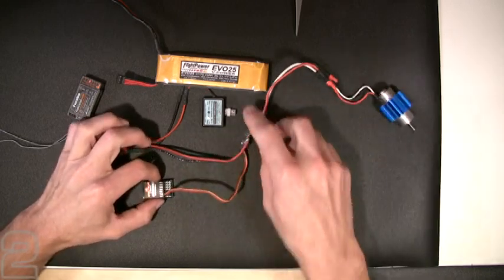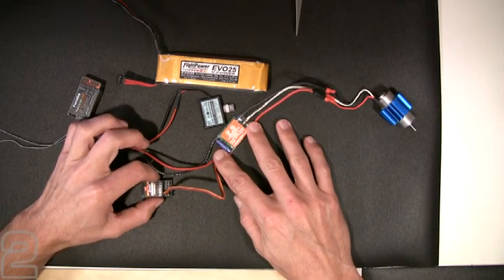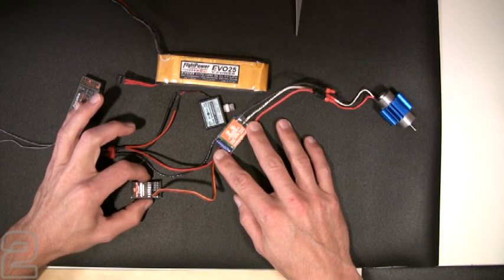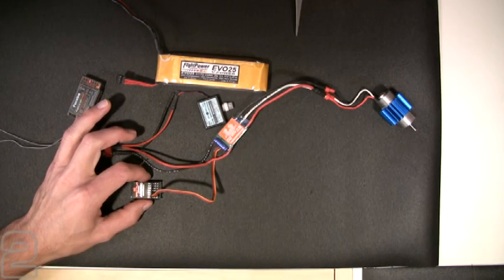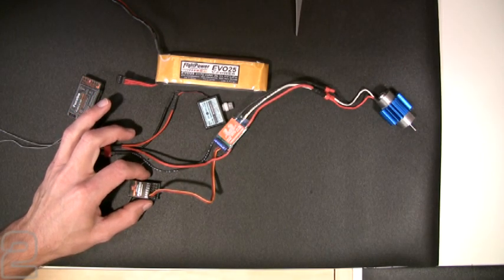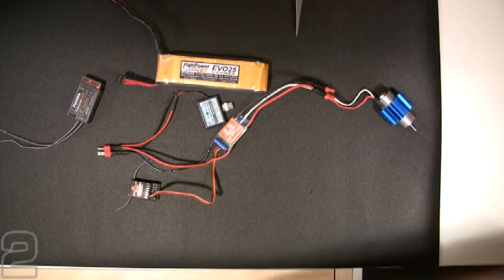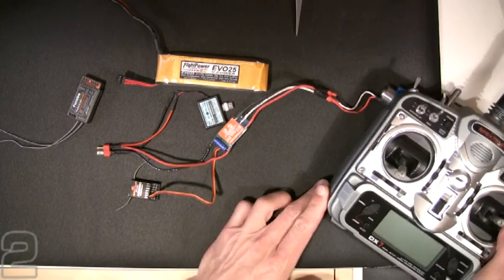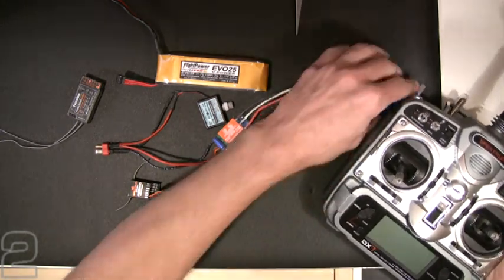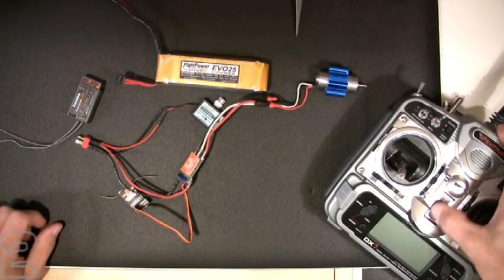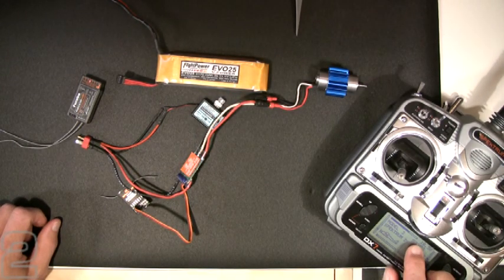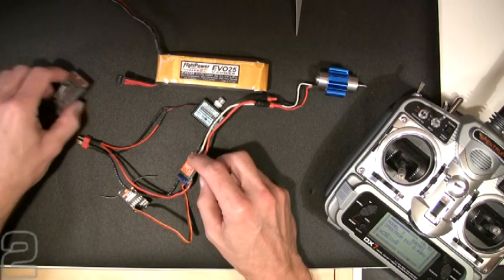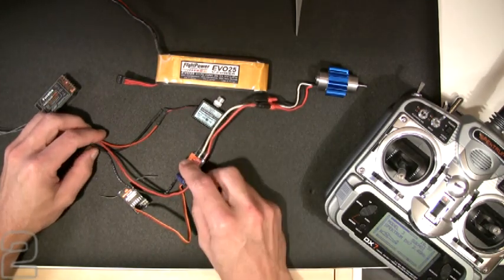It's connected through the ESC to my AR6100 receiver, and I'm going to control it with a Spektrum DX7 transmitter. As I turn on my transmitter, I have the correct model selected. In this case, I actually used it for a test in the Sukhoi.